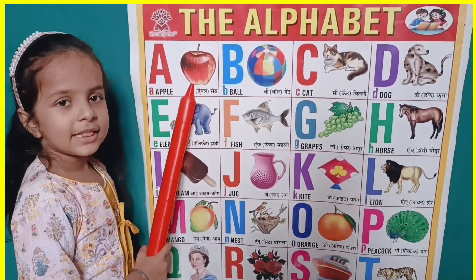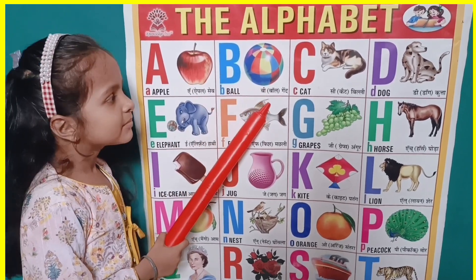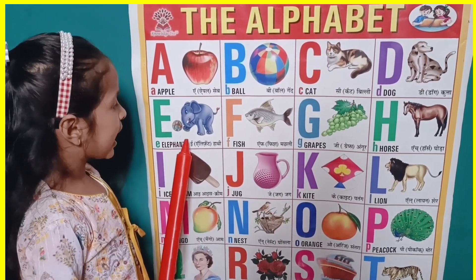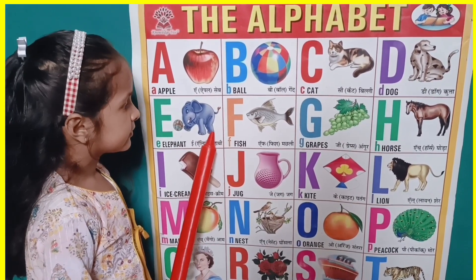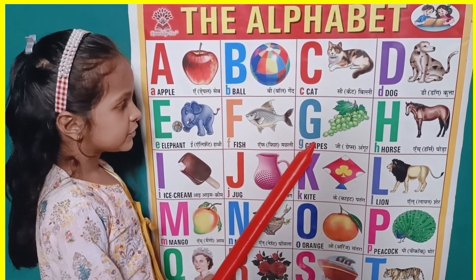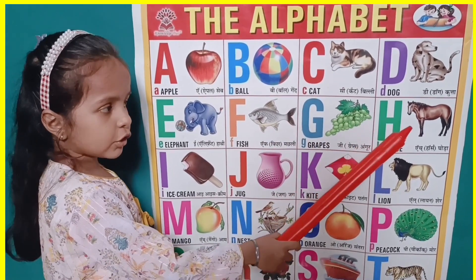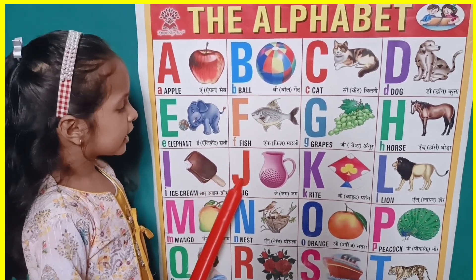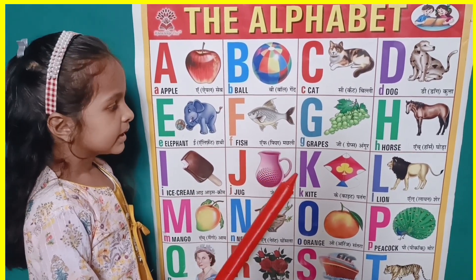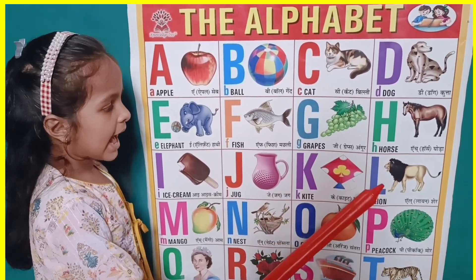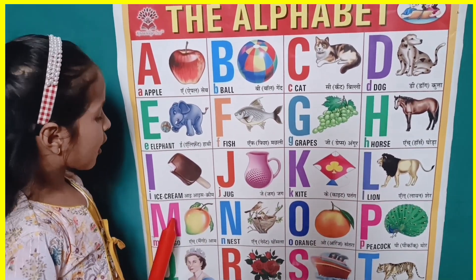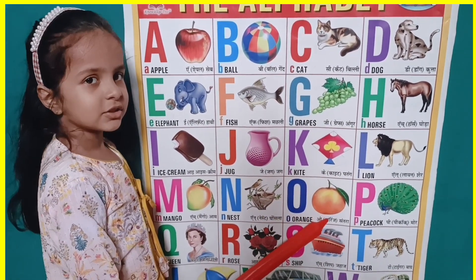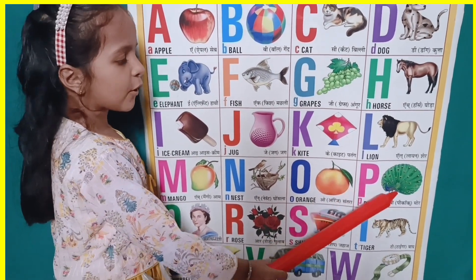A for apple, B for ball, C for cat, D for dog, E for elephant, F for fish, G for grass, H for horse, I for ice cream, J for jar, K for kite, L for lion, M for mango, N for nest, O for orange, P for peacock.